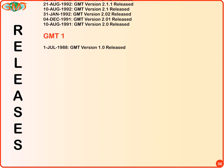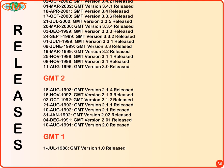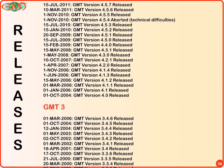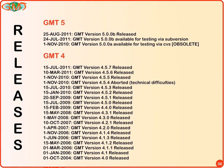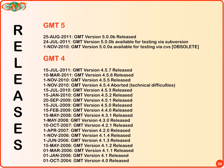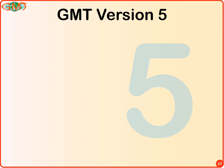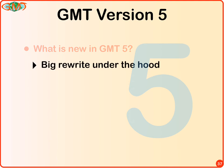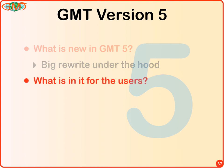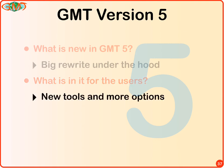GMT releases: we started with version 1 in 1988, and there have been many releases since. The last version most of you are using is 4.5.7, released in the summer. After that we started with GMT 5, which is still a beta version release. What's new in GMT 5? It's actually a big rewrite under the hood — most users won't really notice how big the rewrite was because they tend to use the tools and not dig into the code. But there are many new tools, more options, and a lot of streamlining. For developers wanting to write their own code using GMT, there's a huge change: you can now have API access to GMT functionality.